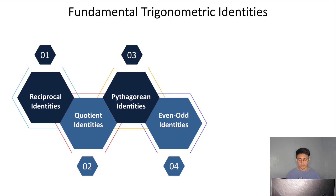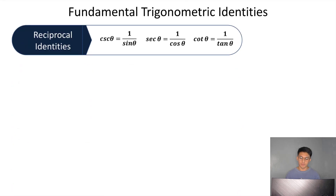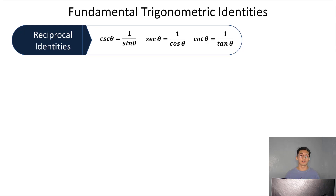Let's enumerate all the formulas. For reciprocal identities, we have three: cosecant theta is equal to one over sine theta; secant theta is equal to one over cosine theta; and cotangent theta is equal to one over tangent theta. These three were already covered in our previous lesson on trigonometric functions, where we used them when solving sides of a triangle or values of trigonometric functions.